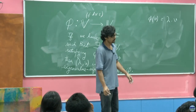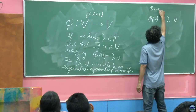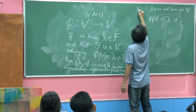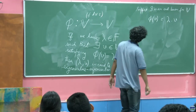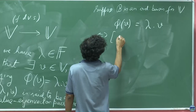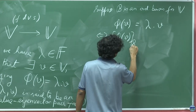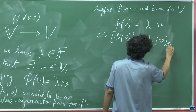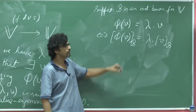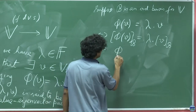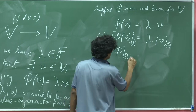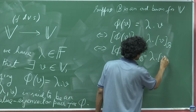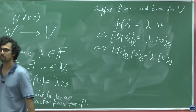Say we assign some ordered basis B for V — this exists because it is a finite-dimensional vector space. Then phi acting on v is one and the same as writing phi's representation under this basis acting on v's coordinate representation under this basis, which equals lambda times v's coordinate representation. This brings us back to the domain of Euclidean spaces.